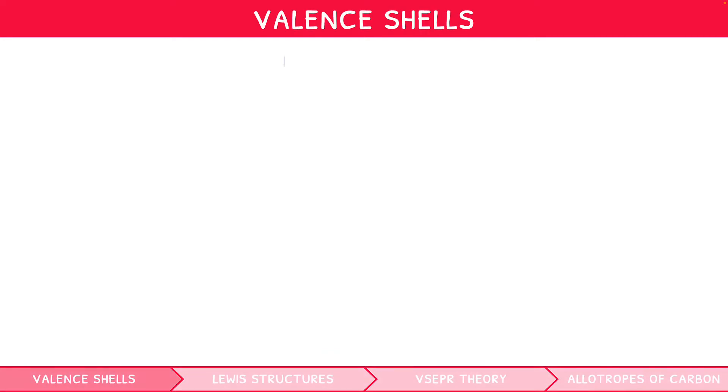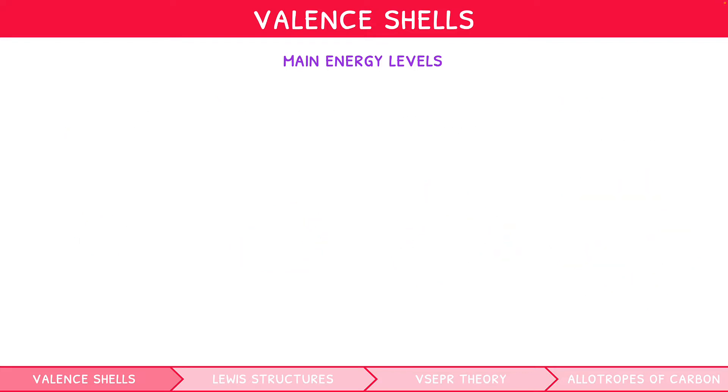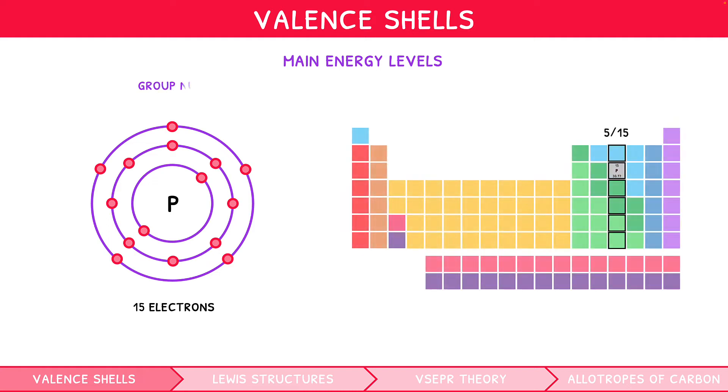As a reminder, the four main energy levels contain 2, 8, 18, and 32 electrons. A valence shell is the outermost energy level of an atom. If we take the example of phosphorus, it has 15 electrons, so it would have 2 electrons in the first energy level, 8 in the second, leaving 5 in the third energy level, its valence shell. Remember, the group number of an element is the same as the number of electrons in the valence shell, so phosphorus is found in group 5, i.e. 15.